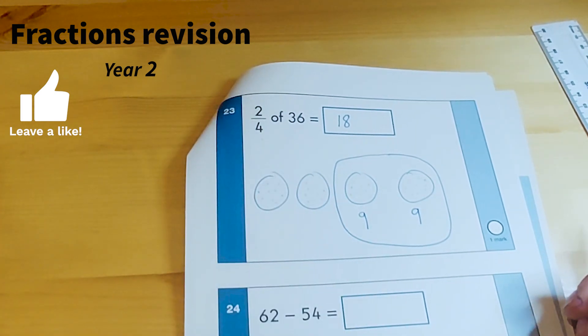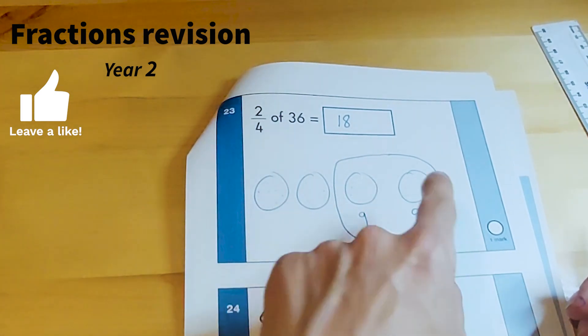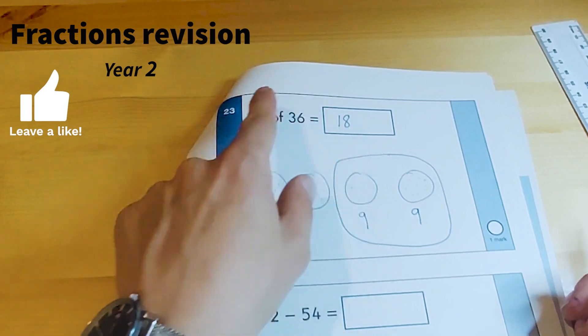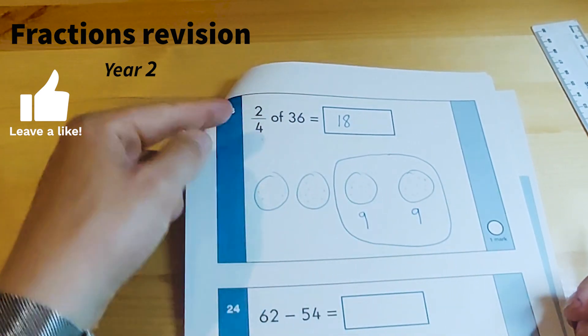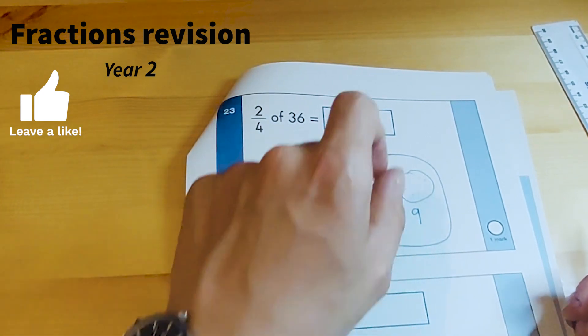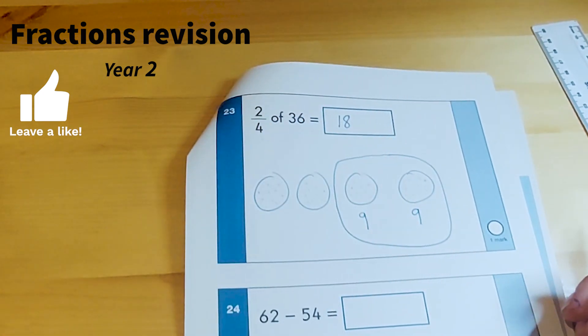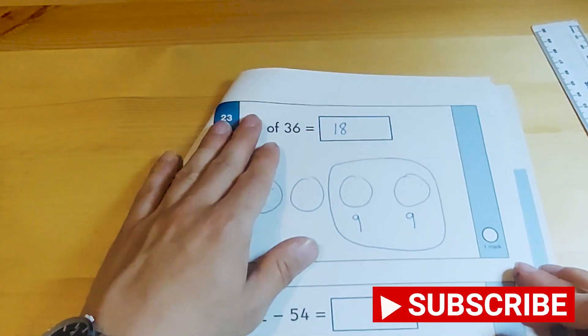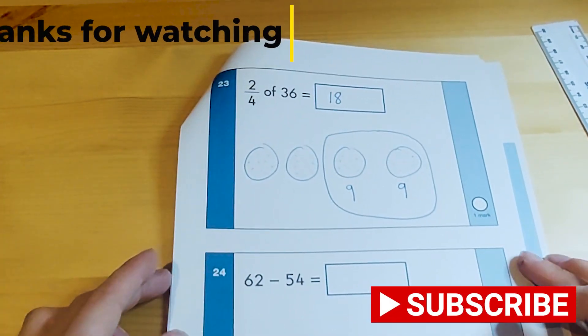So to follow it as a step-by-step process: this tells us how many groups we're sharing it into—one, two, three, four. Draw the groups, share out the 36 amongst those groups. And the numerator tells us how many groups we need to count. So we've got 9 and 9, meaning that two quarters makes 18. That was the final fractions question on the arithmetic paper.